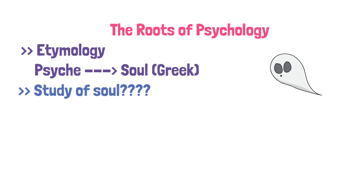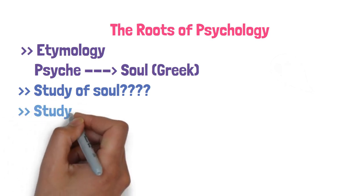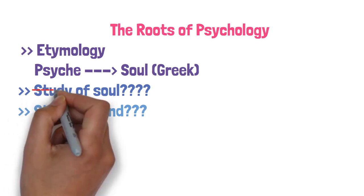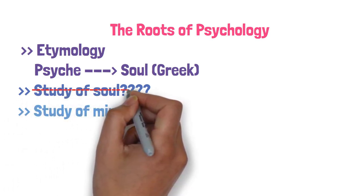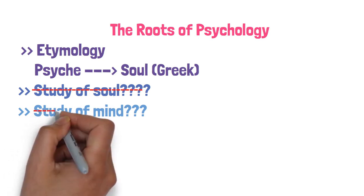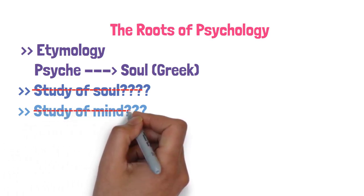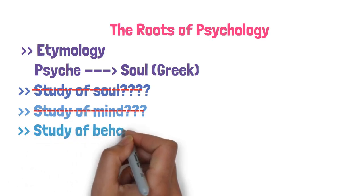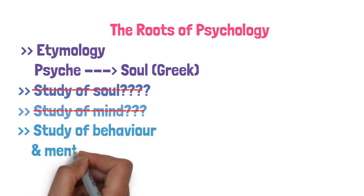It was replaced with study of mind. Even mind is an abstract concept, very difficult to understand. Therefore, even this was replaced. And currently we refer to psychology as the study of behavior and mental processes.